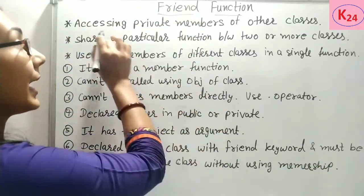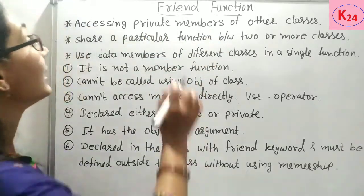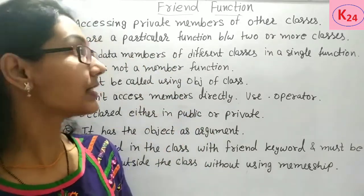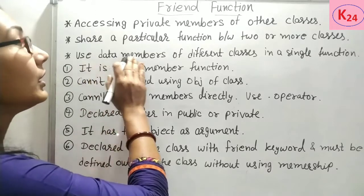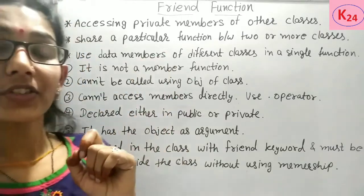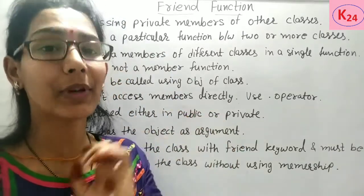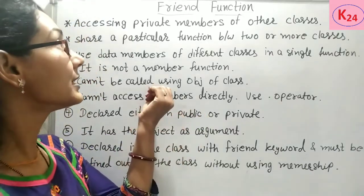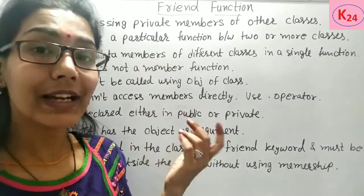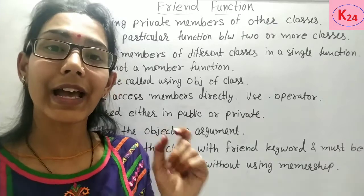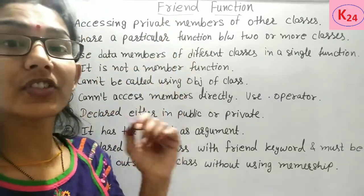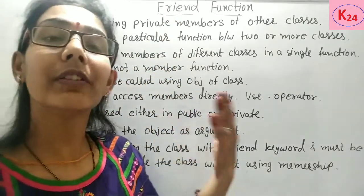So friend function is used for accessing private members of other classes. It is also used for sharing a particular function between two or more classes, and also for using data members of different classes in a single function. The friend function is not a member function because it is not in the scope of the class, but it has more access rights than the member function — it can access private members of different classes as well.